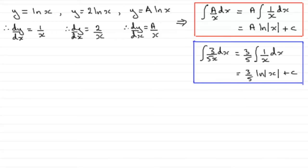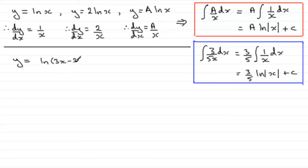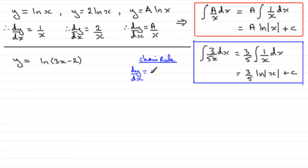Now I want to extend this idea a little further. Suppose we had y equals the natural log of 3x minus 2, and we had to differentiate this. We should be familiar with differentiating composite functions like this using the chain rule. If you're unsure of the chain rule, I've covered it in my video tutorials — just go to my website and look under differentiation, the chain rule. The chain rule states that dy/dx equals dy/dt multiplied by dt/dx, where t is the same quantity.